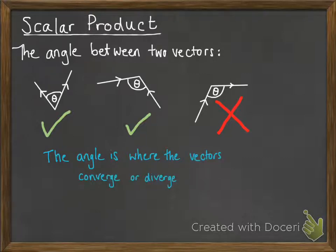We can find the angle between those two vectors, it's just not where that theta is marked on the third one. If we were finding the angle between those two vectors in that diagram, this is what we'd be doing. It's where those two vectors are moving away from each other.